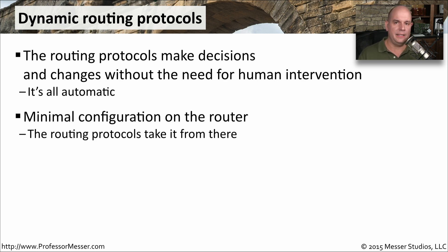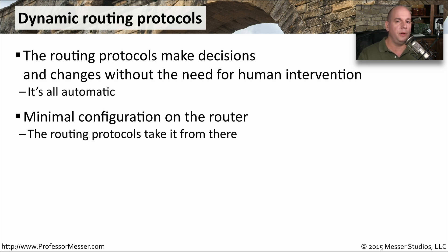It takes relatively little to get a dynamic routing protocol running on your router. You configure your router with all of your different interfaces and the subnet masks to those interfaces, tell the router that you'd like to use a particular routing protocol, and set some configurations for that protocol. The router takes it from there — it uses that dynamic routing protocol to communicate on the network to other routers. They all begin communicating between each other, keeping track of any changes and making sure that all traffic is able to get all the way through the network.